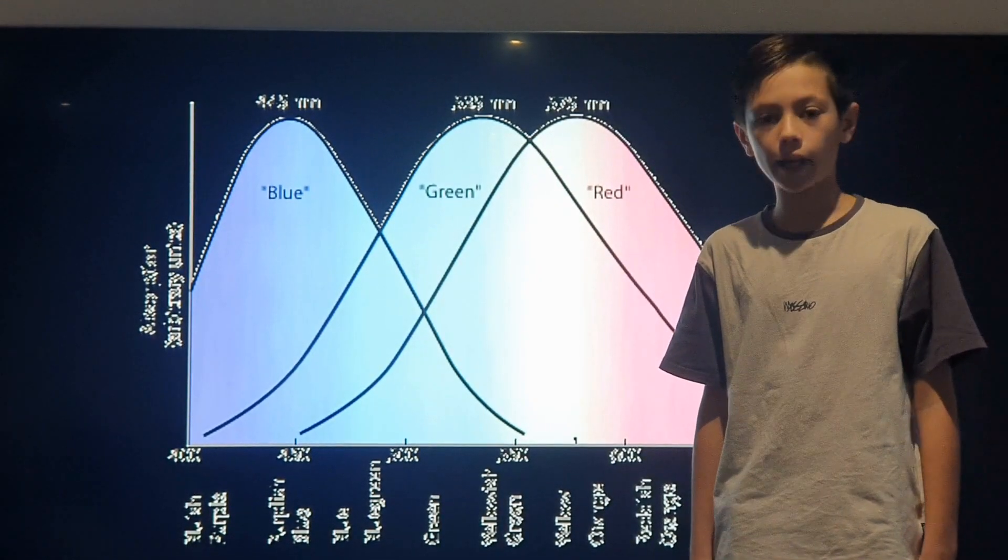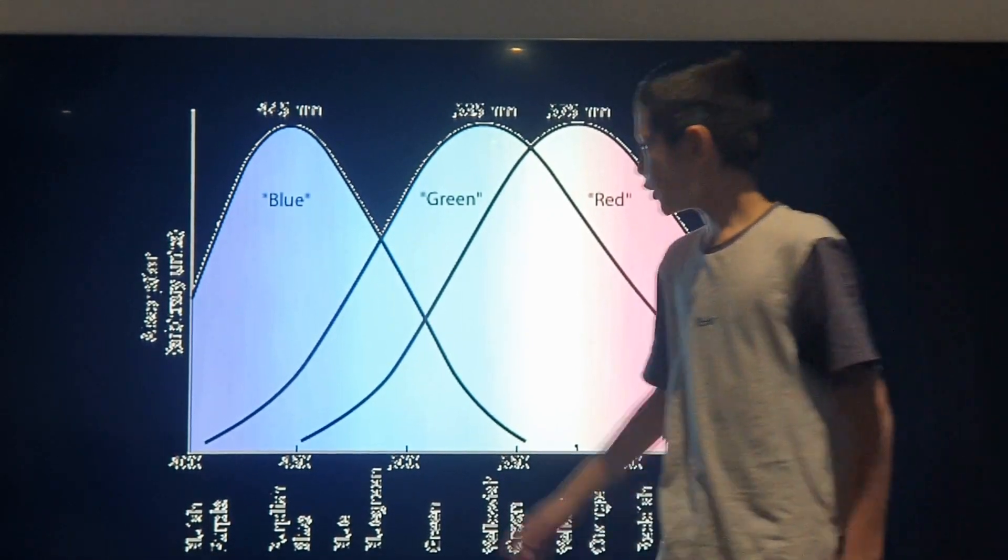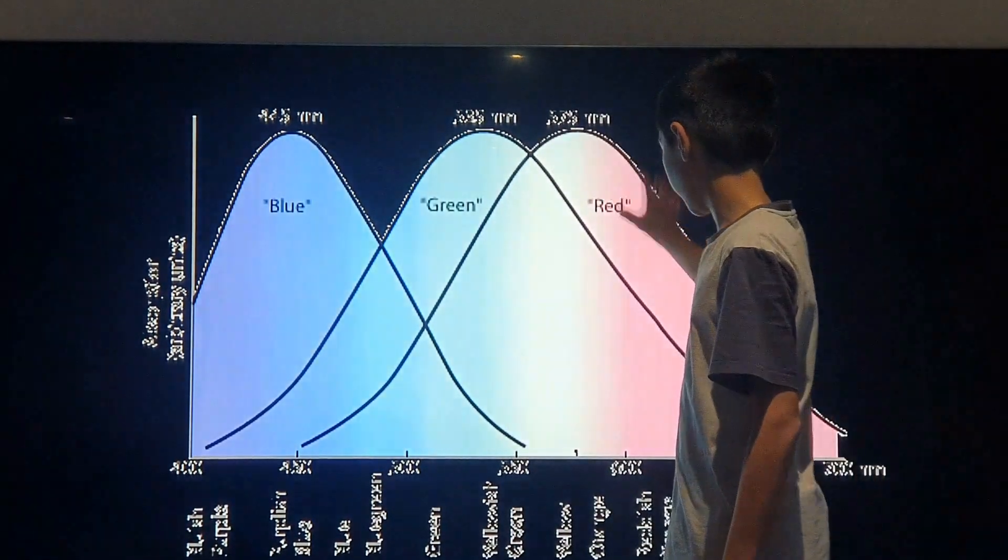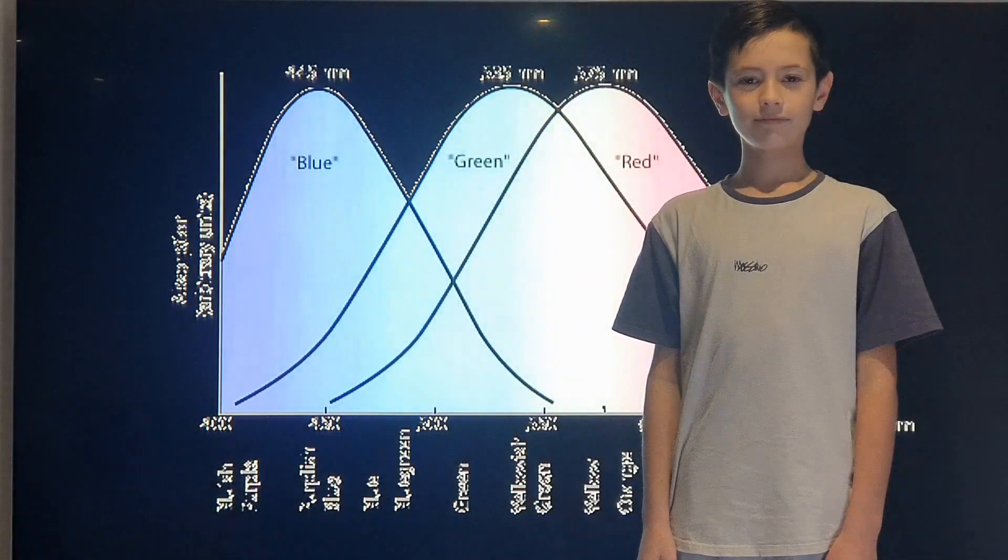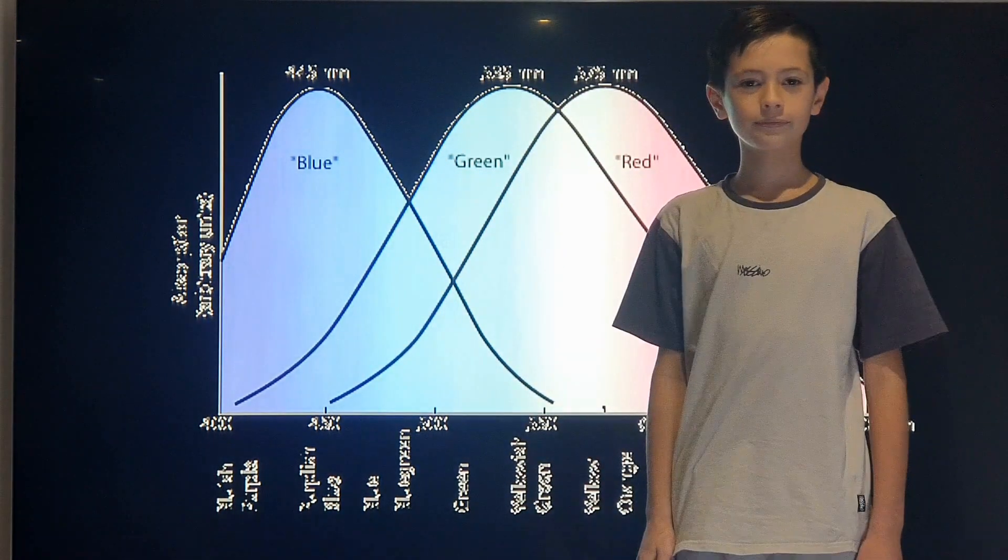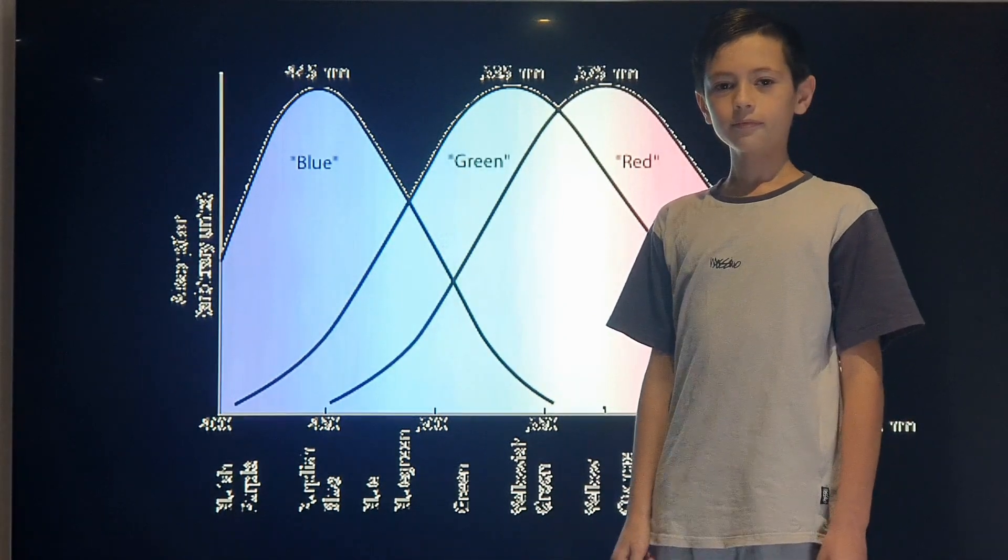And although science calls them red, green, blue cones, that may not be entirely accurate. You see, we have one in the blue region and two in the yellow region. So we have one cone that's really sensitive to greenish yellow, one that's really sensitive to reddish yellow, and a blue one that's slightly sensitive to green as well.